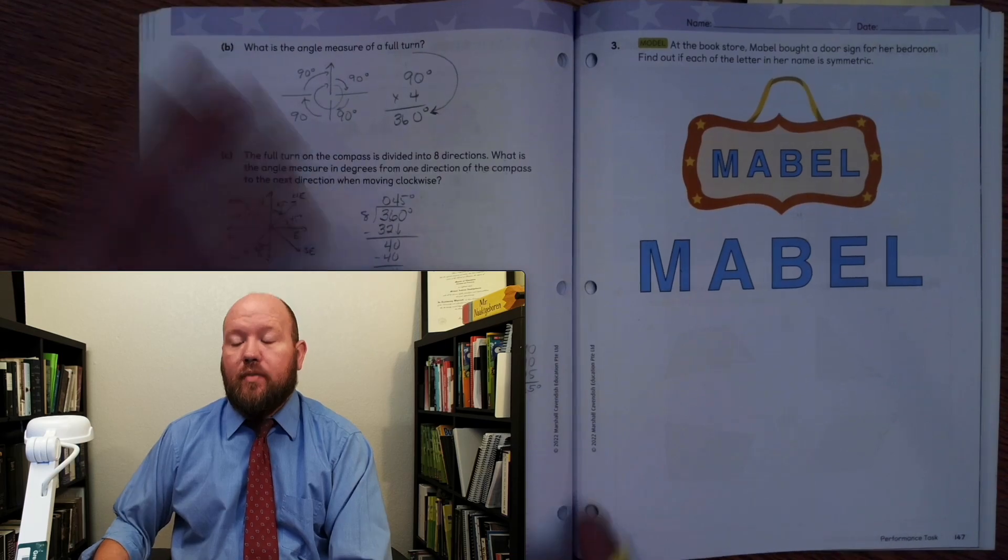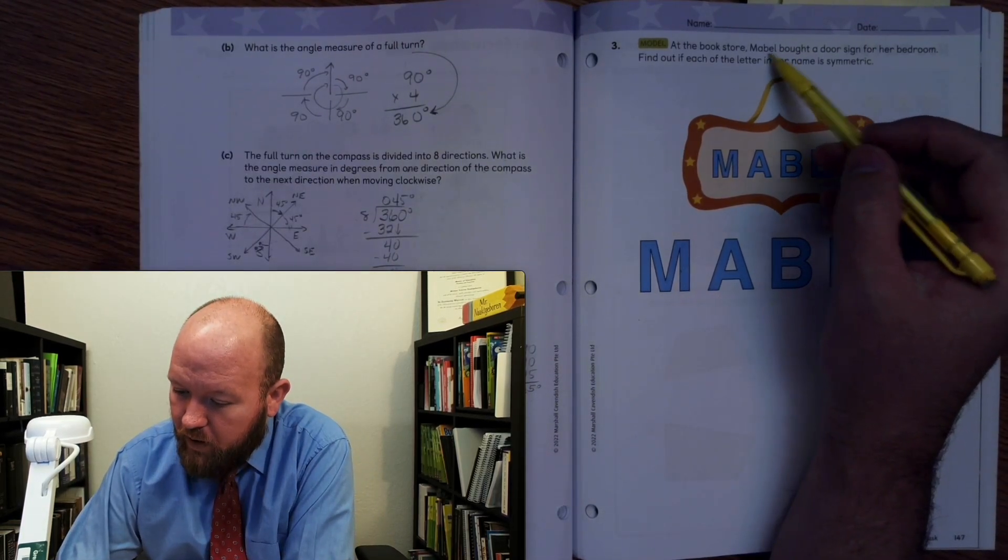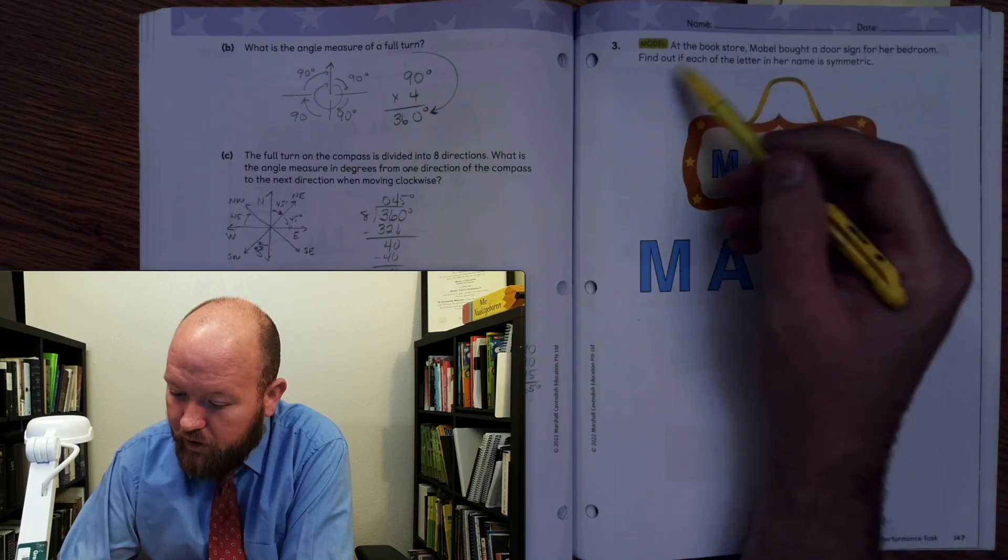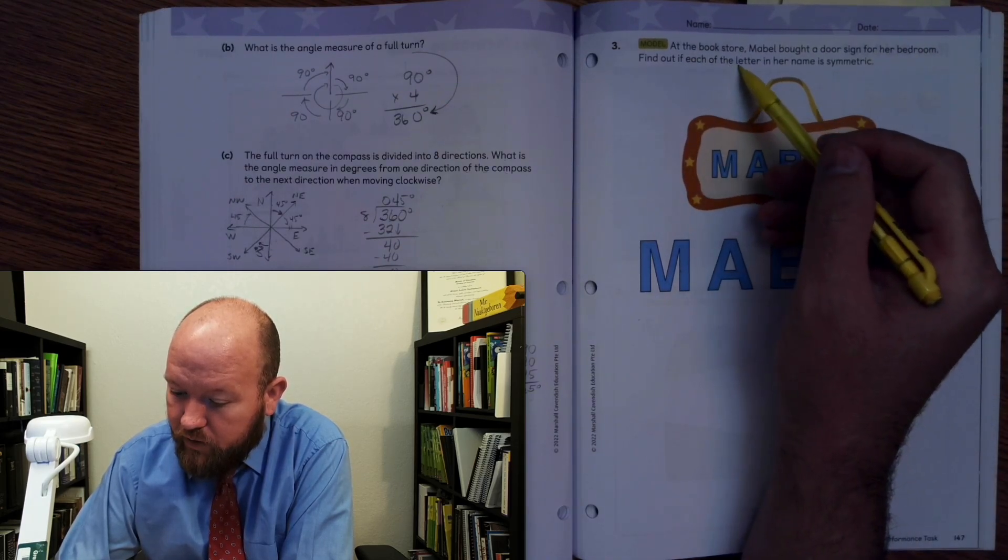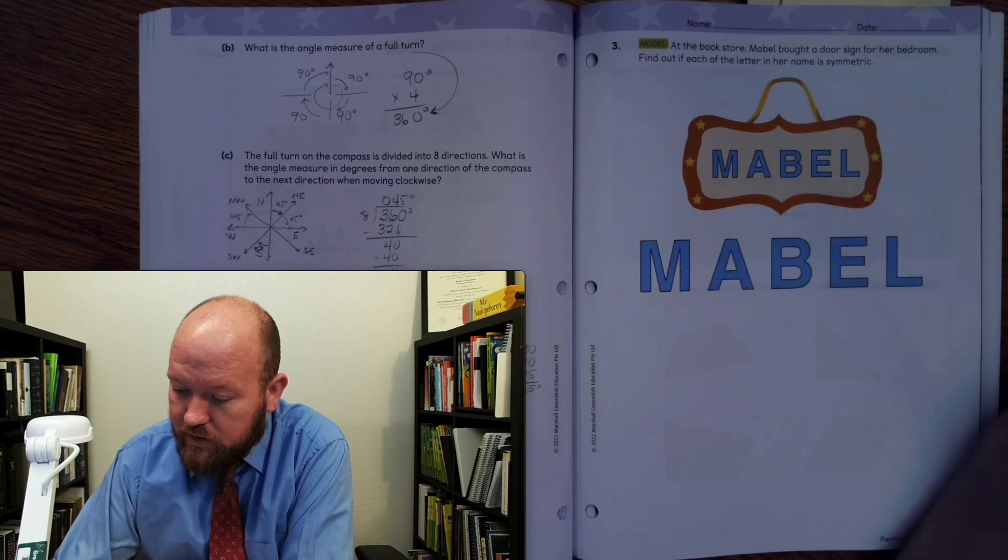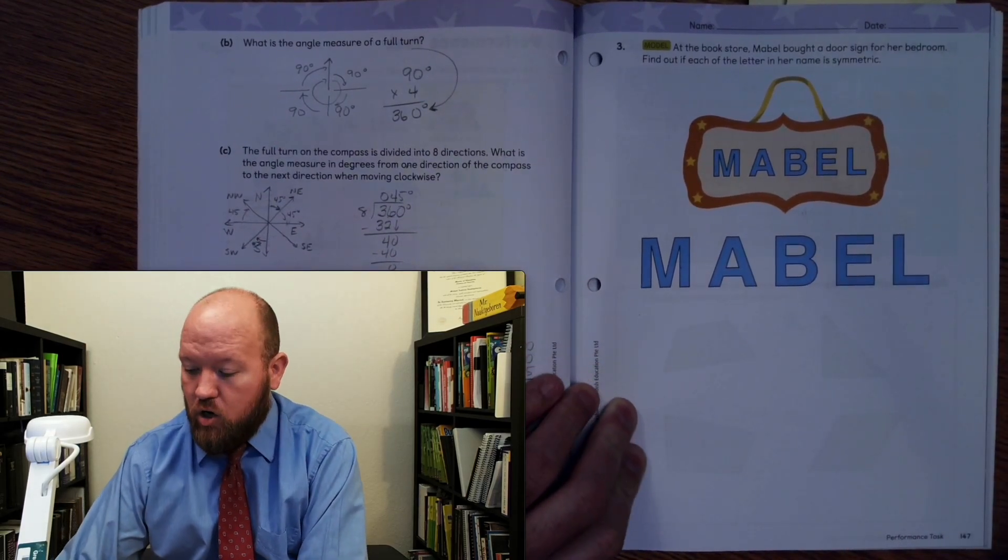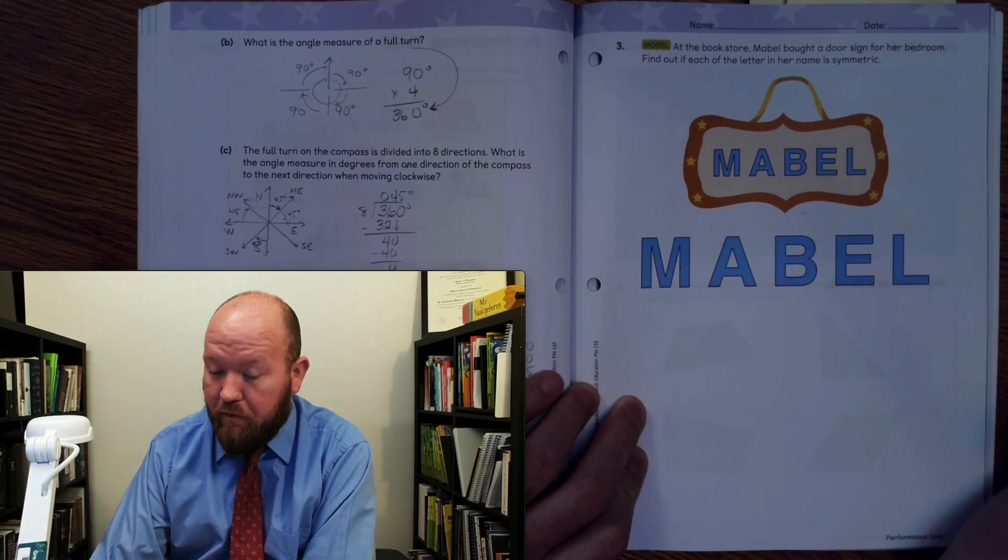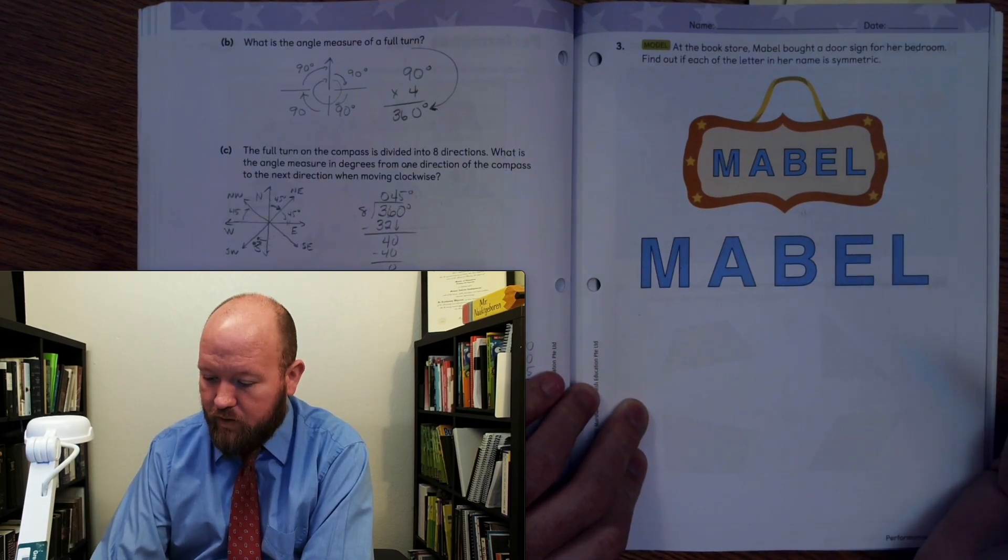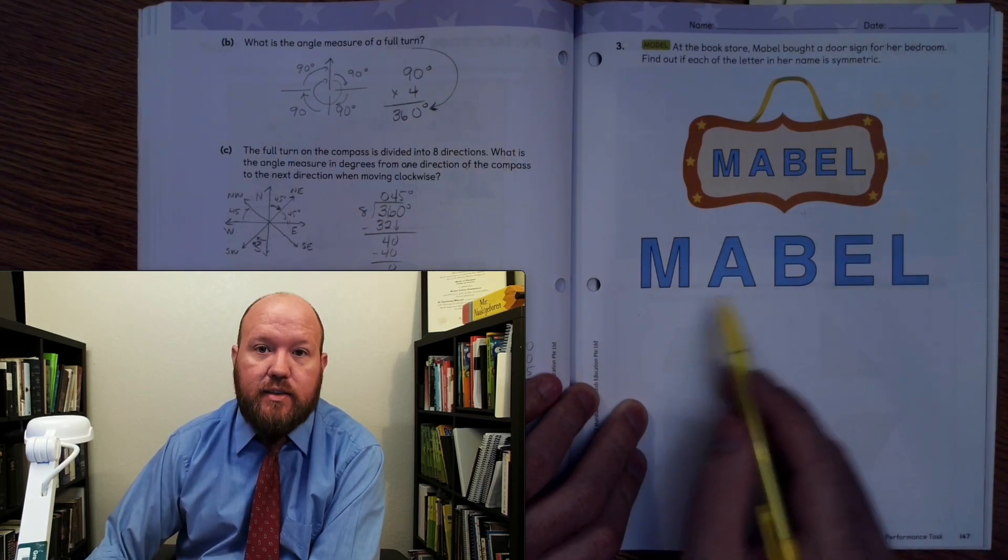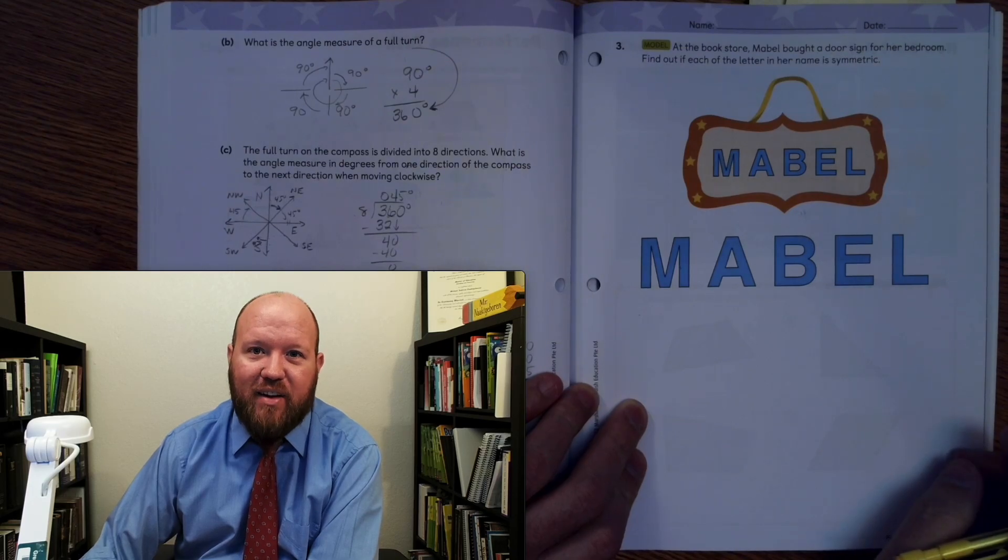Here we have the bookstore. Mabel bought a door sign for her bedroom with her name on it. Find out if each of the letters in her name is symmetric. Okay. So can we divide the letters of her name so that they fold over perfectly? How can I divide the M? So actually let's go and pause the video. See if you can figure these out and then come back and we'll look at them together.